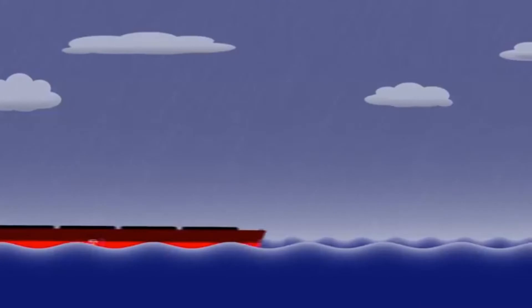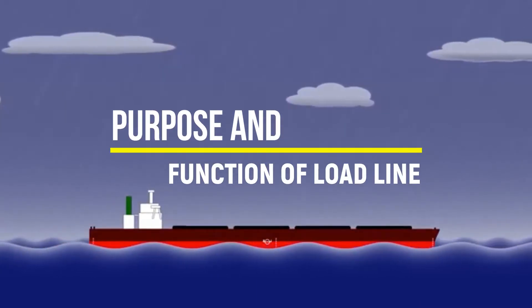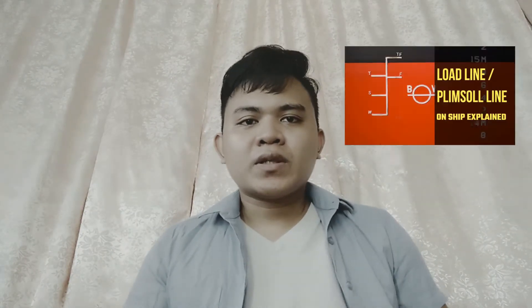Good day. Today, I will discuss the purpose and function of load line and enumerate the annexes of the International Load Line Convention and explain each one of them. Load line, also called a plimsoll mark, is a marking indicating the extent to which the weight of a load may safely submerge a ship by way of a waterline limit. It is positioned amidships on both sides of the vessel's hull and indicates the draft of the ship and the legal limit to which a ship may be loaded for specific geographical areas and seasons.